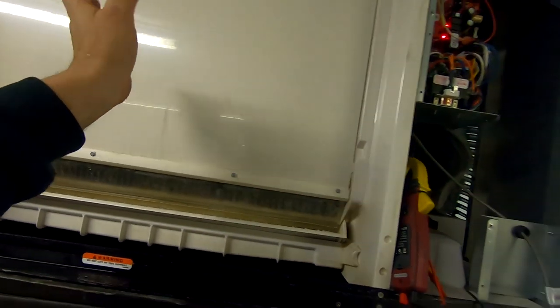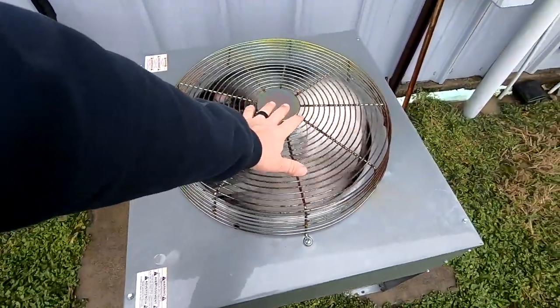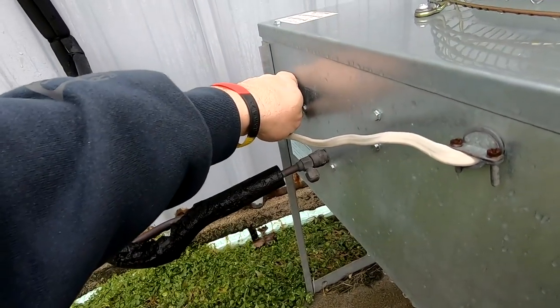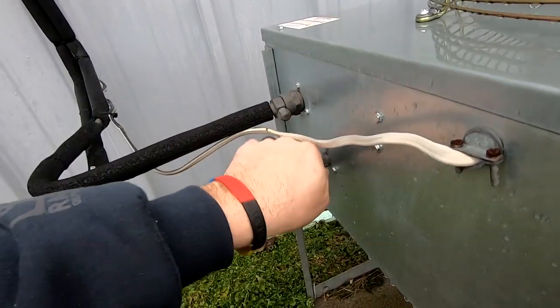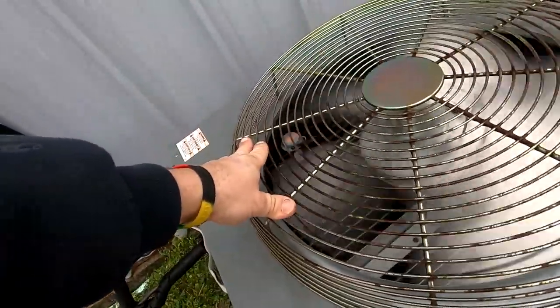Then basically it starves itself of water because it doesn't know to add water because the ice is on the sensor making it think, hey, I'm full of water when I'm not. So that's why it's important to have this curtain up here and to have the door on.